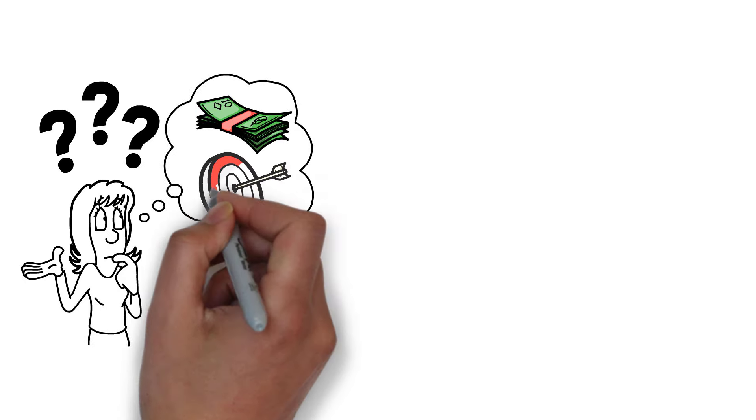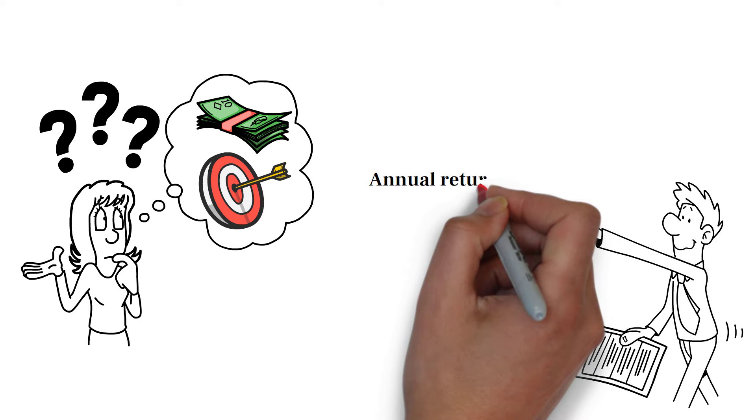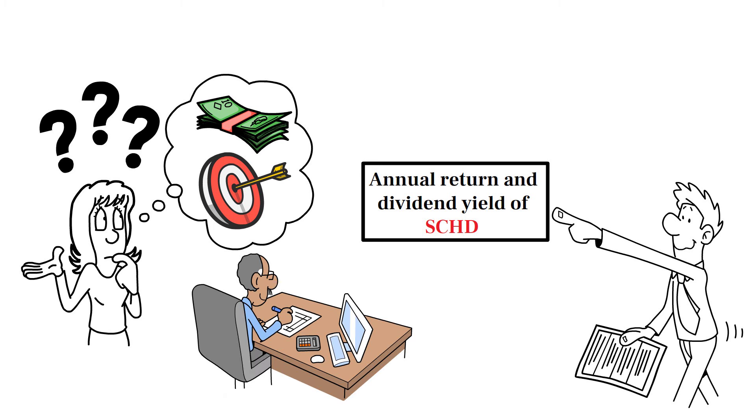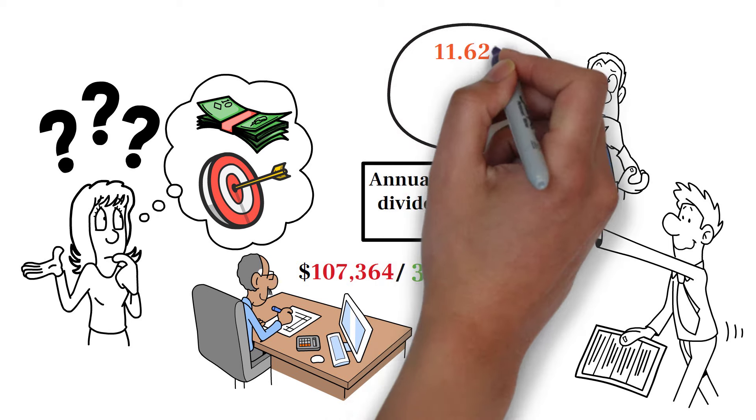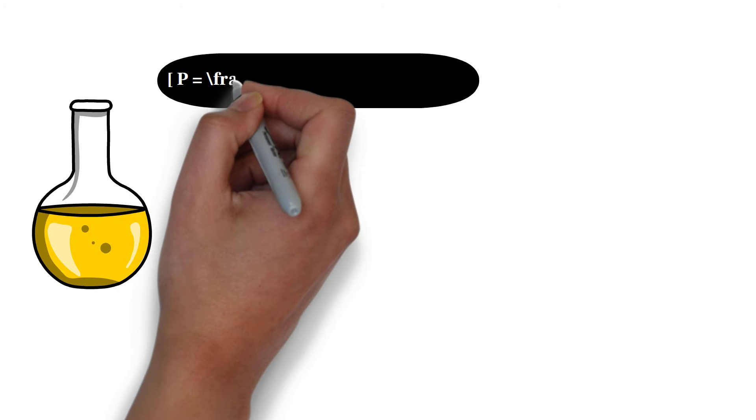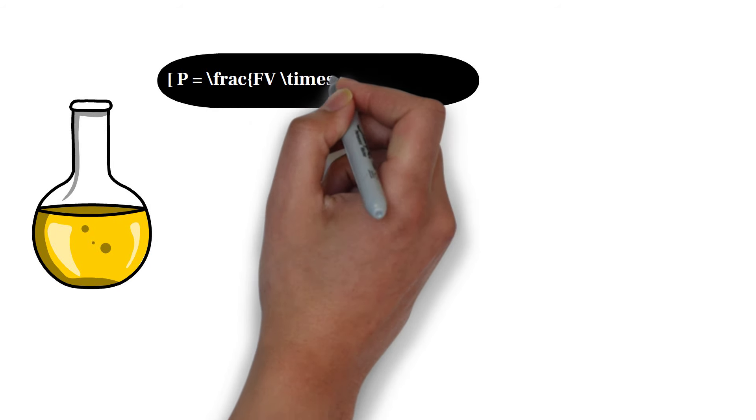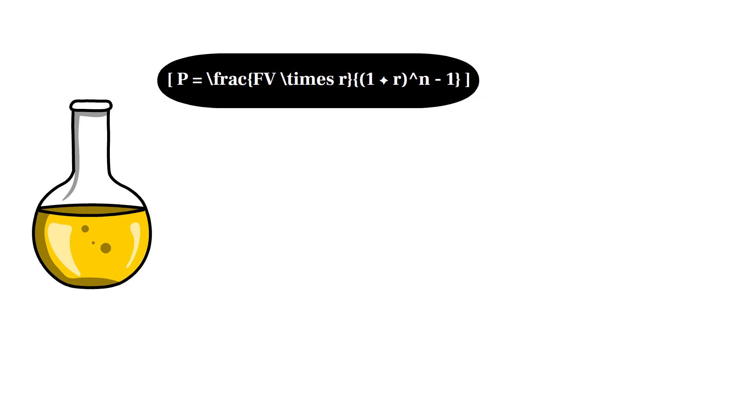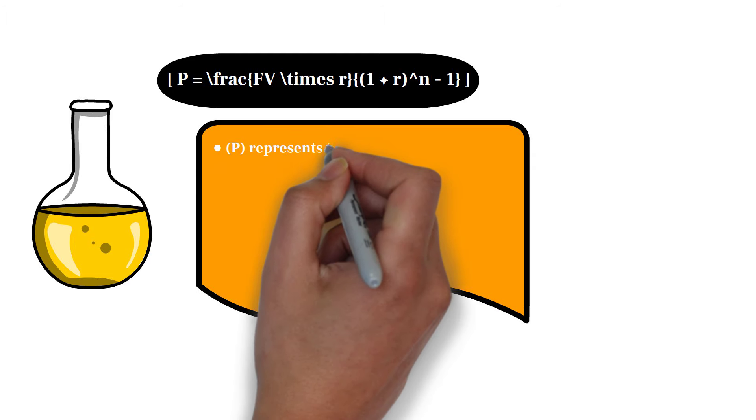To determine how much you need to invest each month to achieve this future target, we consider the average annual return and dividend yield of SCHD. Let's calculate the monthly investment needed to achieve a future value of $107,364 annually over 30 years, assuming an average annual return of 11.62% and a dividend yield of 3.31%. We'll use the future value of an annuity formula: p equals (fv times r) divided by ((1 plus r) to the power of n minus 1).